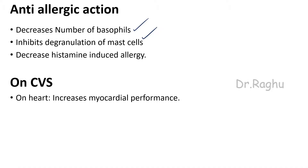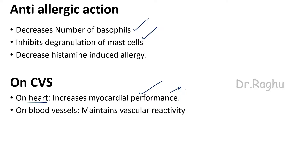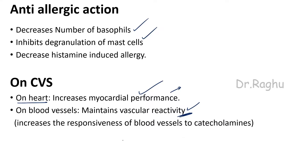On the cardiovascular system: cortisol increases myocardial performance — it may increase heart rate and the force of contraction of the heart. On blood vessels, cortisol helps in maintenance of vascular reactivity, meaning it increases the responsiveness of blood vessels to catecholamines. Catecholamines cause vasoconstriction, and glucocorticoids promote these vasoconstrictions — that is what is meant by maintaining vascular reactivity.